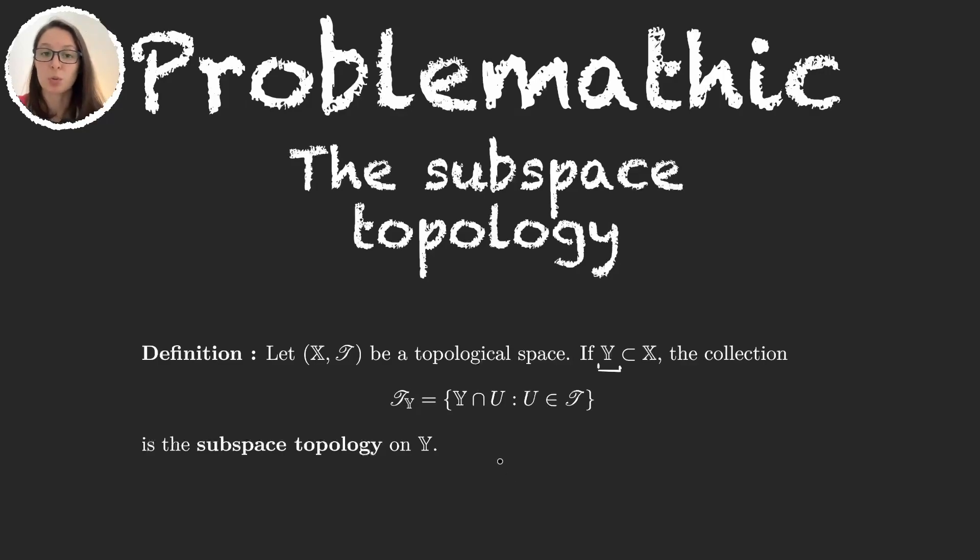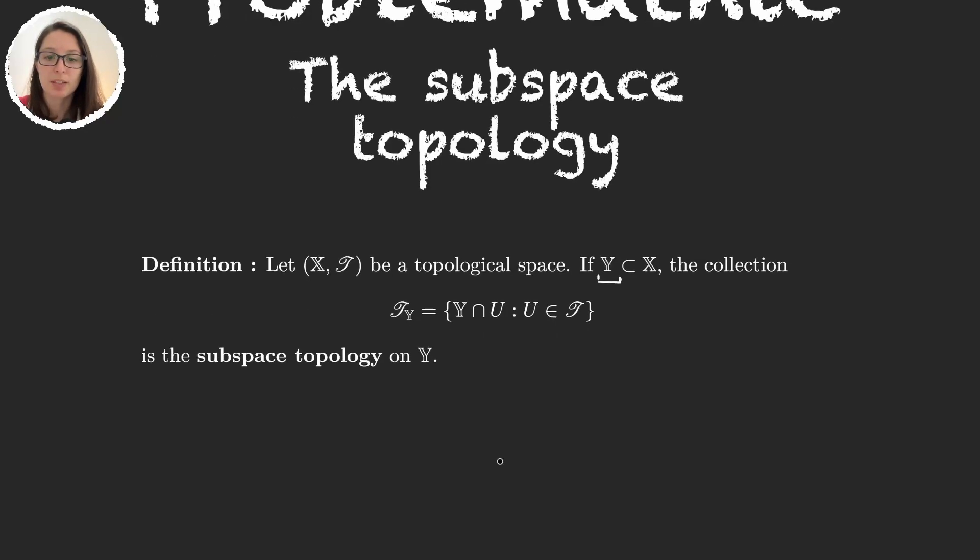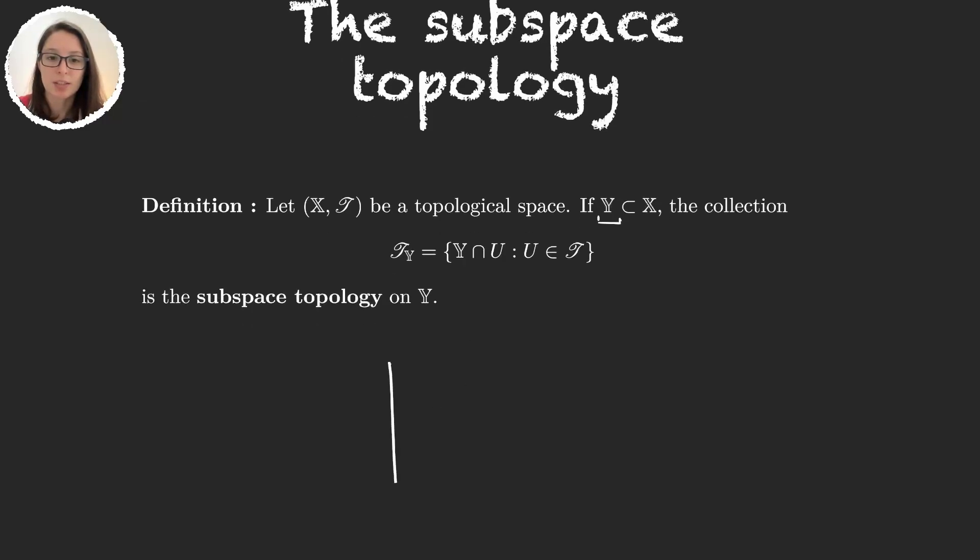Usually when you read Y as subspace of X, we immediately are talking about Y with the subspace topology. Essentially what we are doing is, let's say this is our set X, and this is the subset Y. So to convert the subset into a subspace, we want to define a topology.